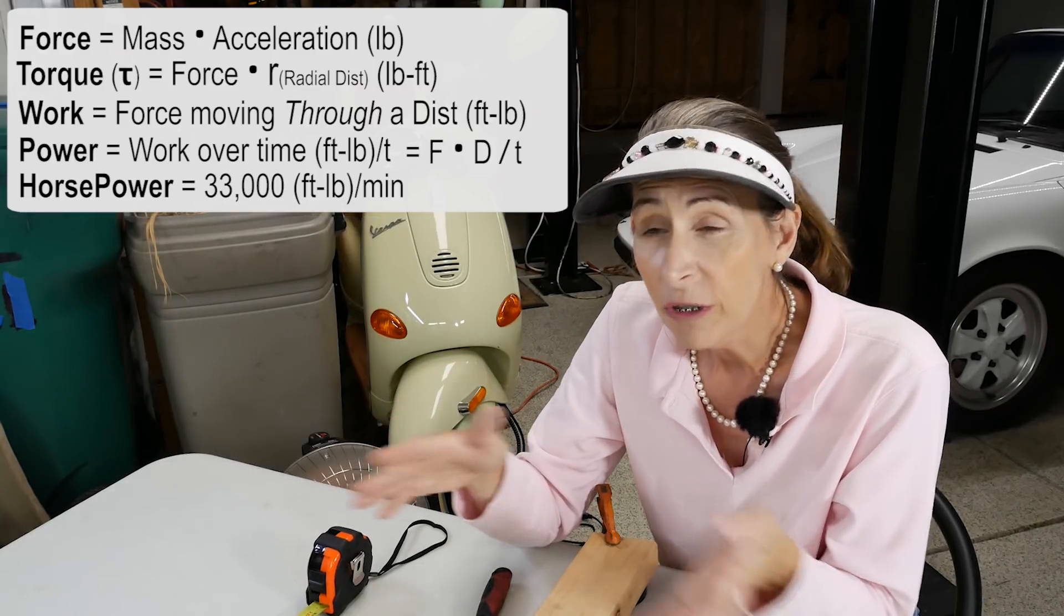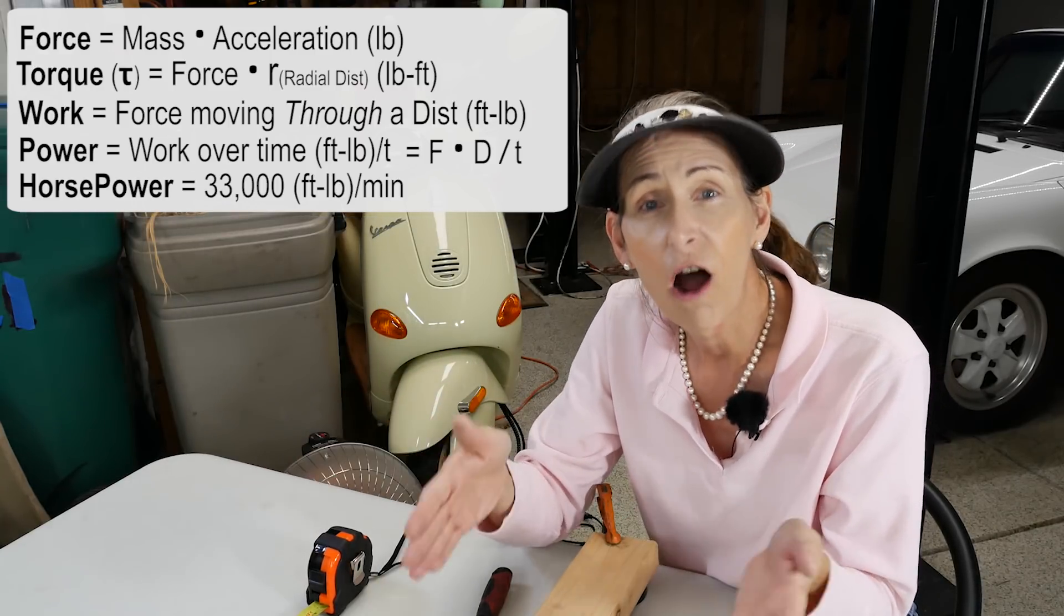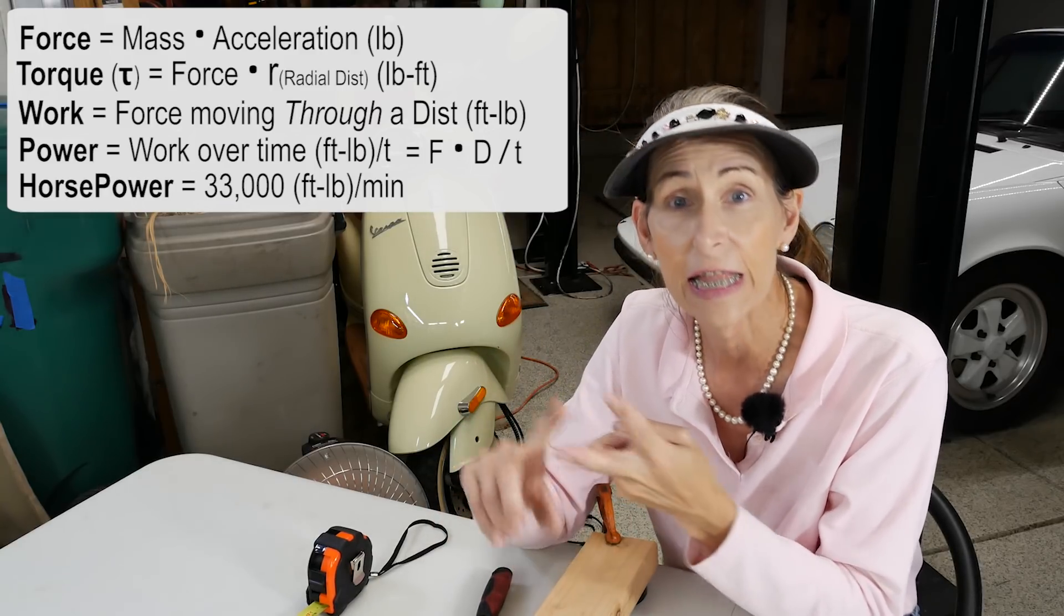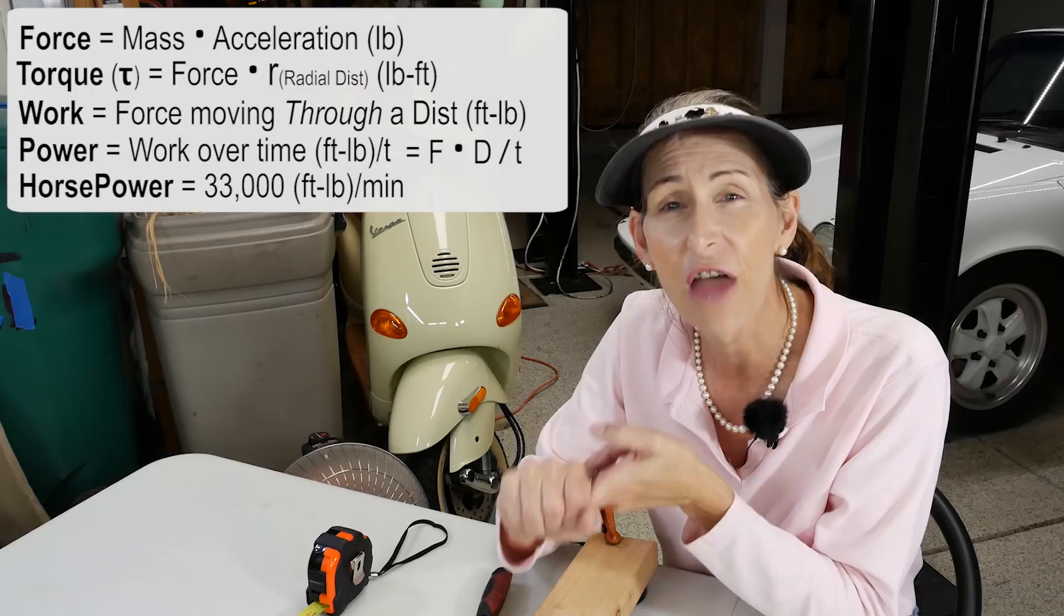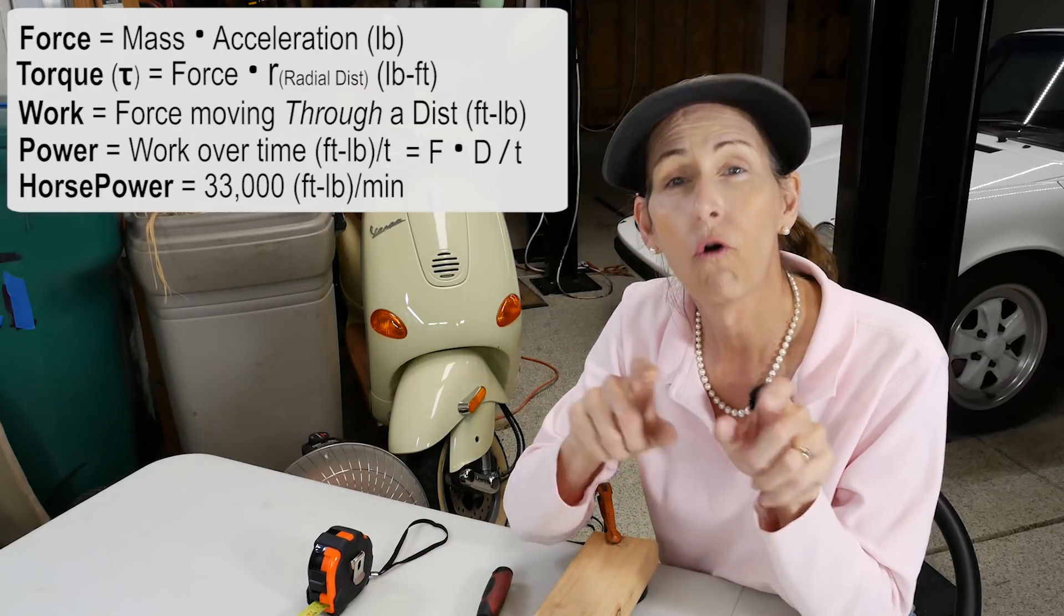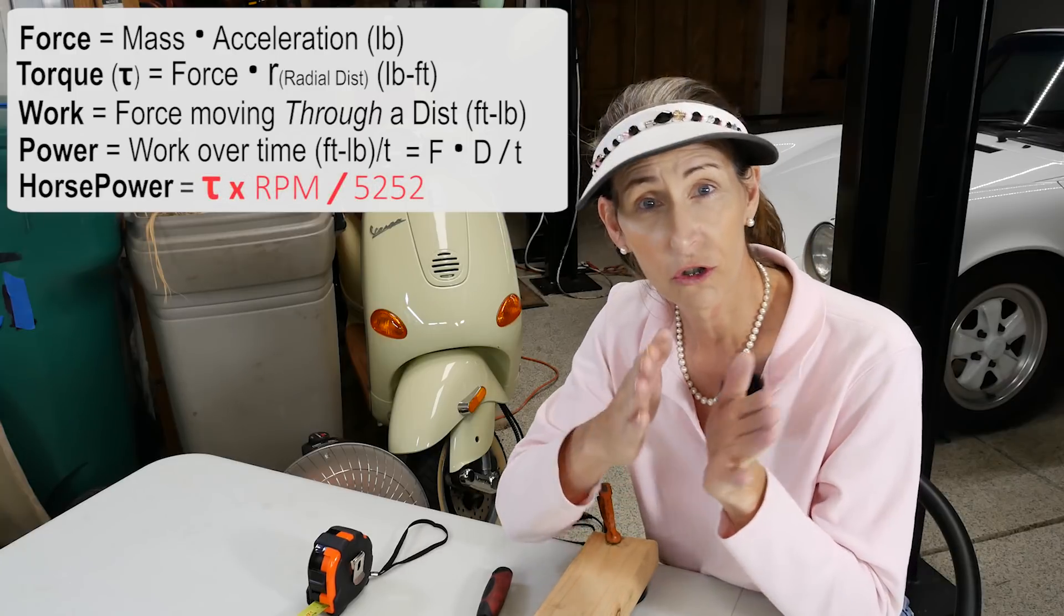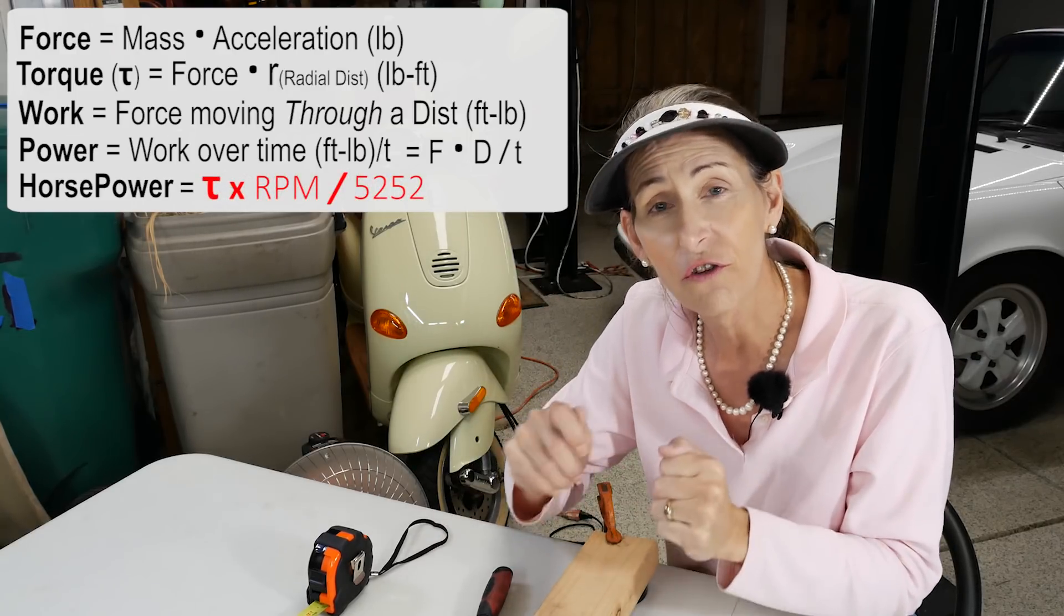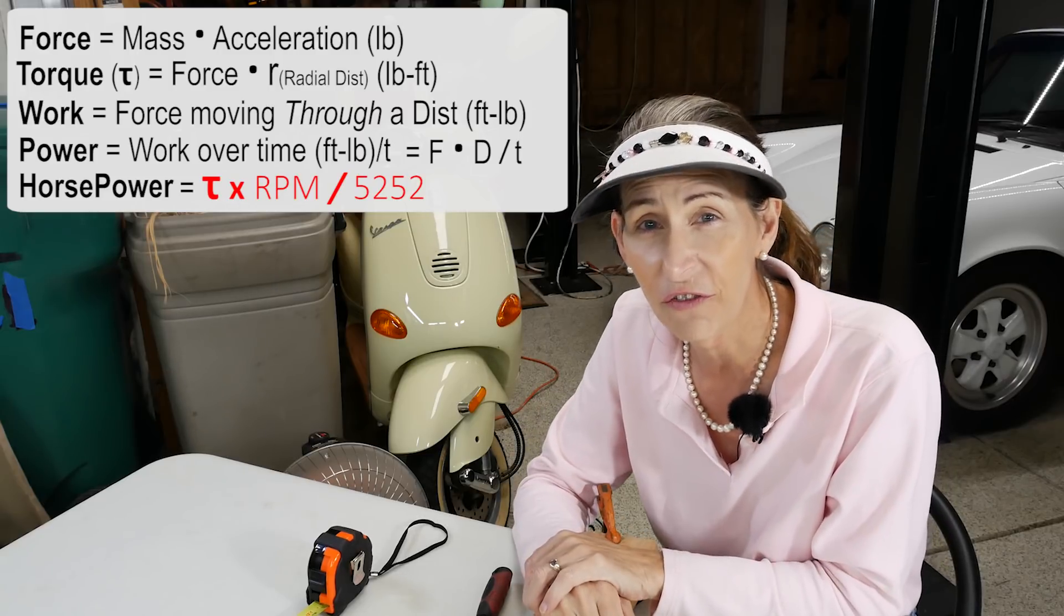So going back to horsepower, we know that horsepower is calculated. All we need to do is measure the RPM and the torque and that's it. So let's go through that whole derivation and figure out how we get to horsepower equals torque times RPM over 5252. Let's see where that 5252 comes from.